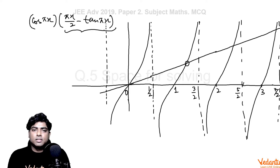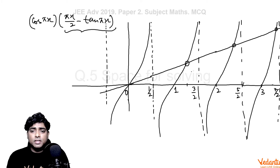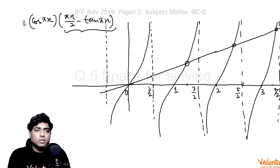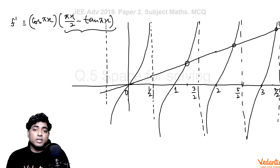We need to check the roots of the second factor [πx/2 − tan(πx)] — these are the critical points of f(x). At each such intersection point, we check whether f'(x) changes sign from positive to negative or negative to positive, to determine if it is a local maximum or minimum.